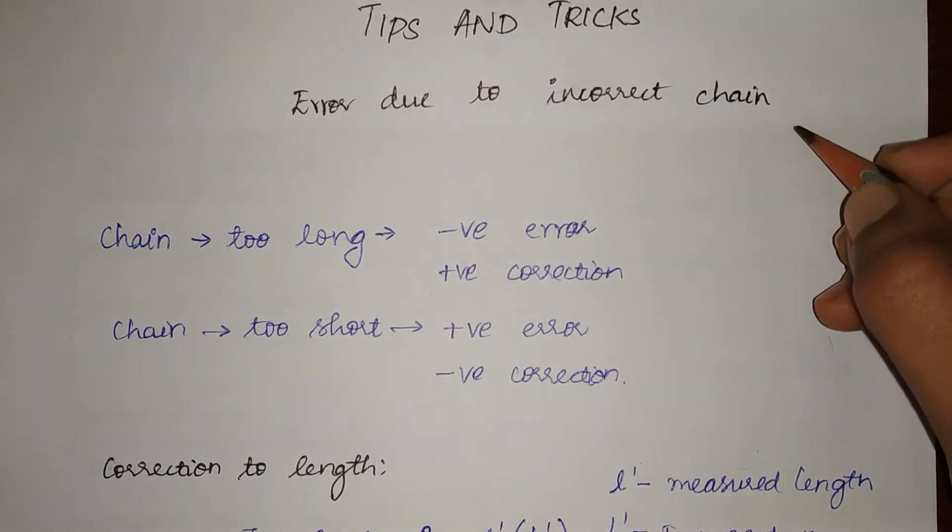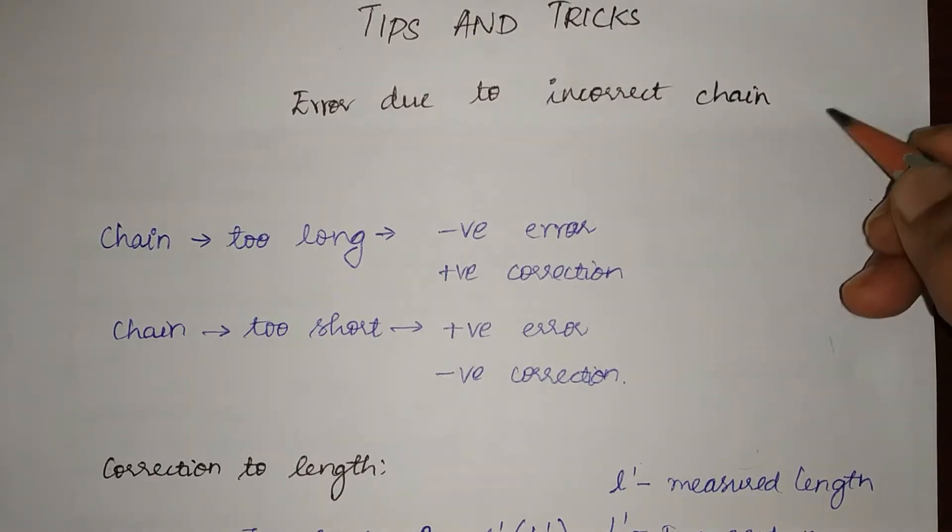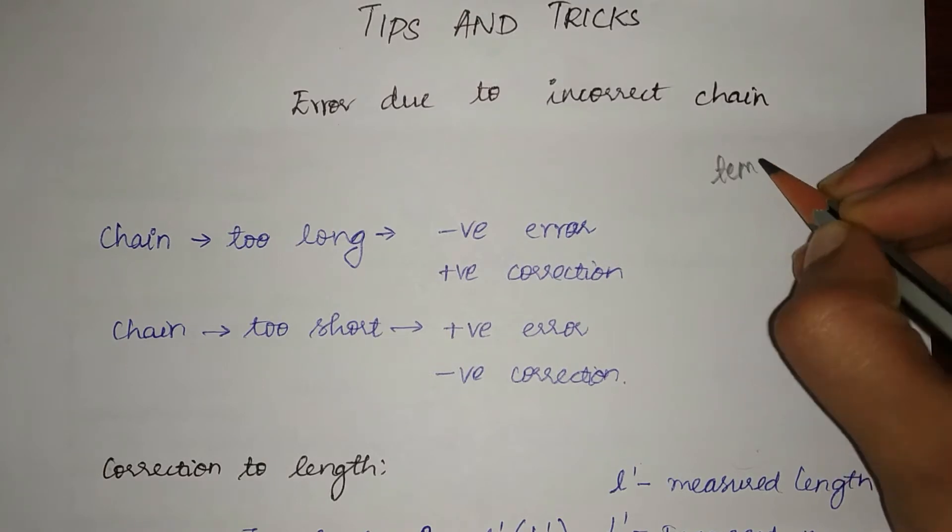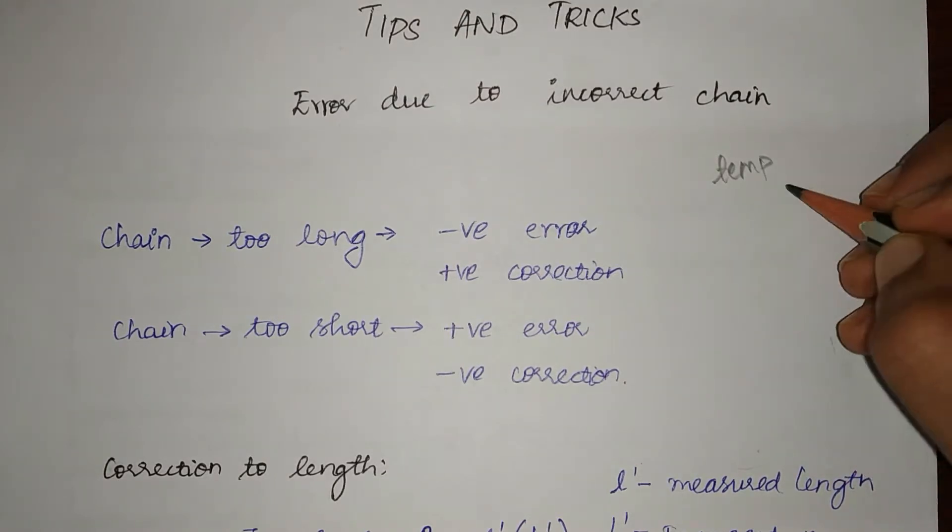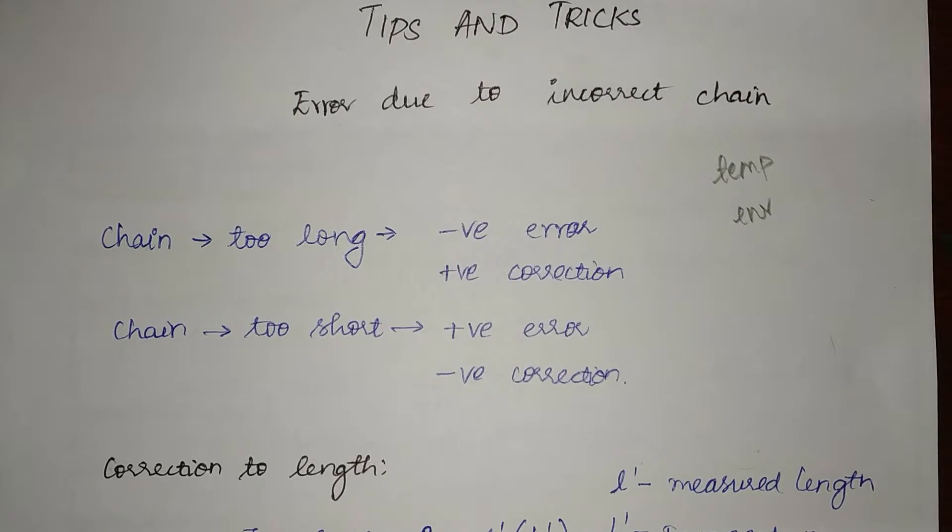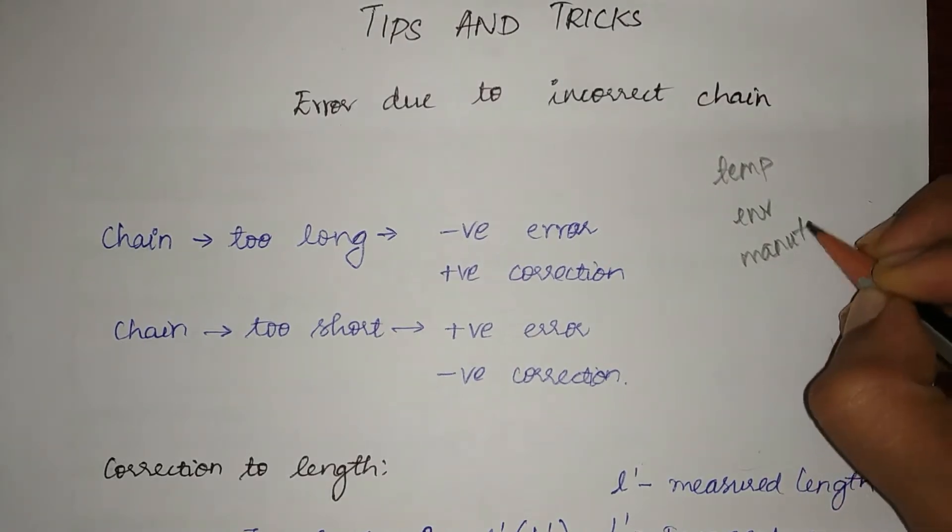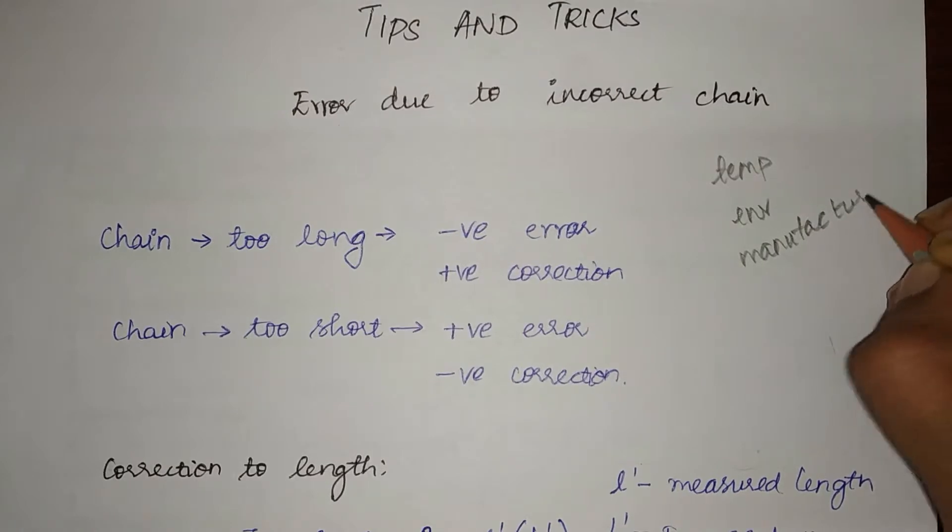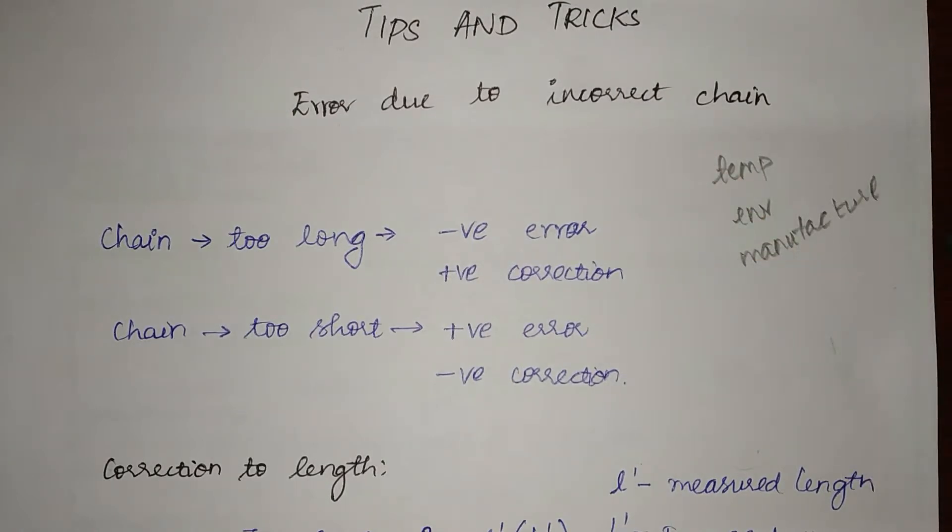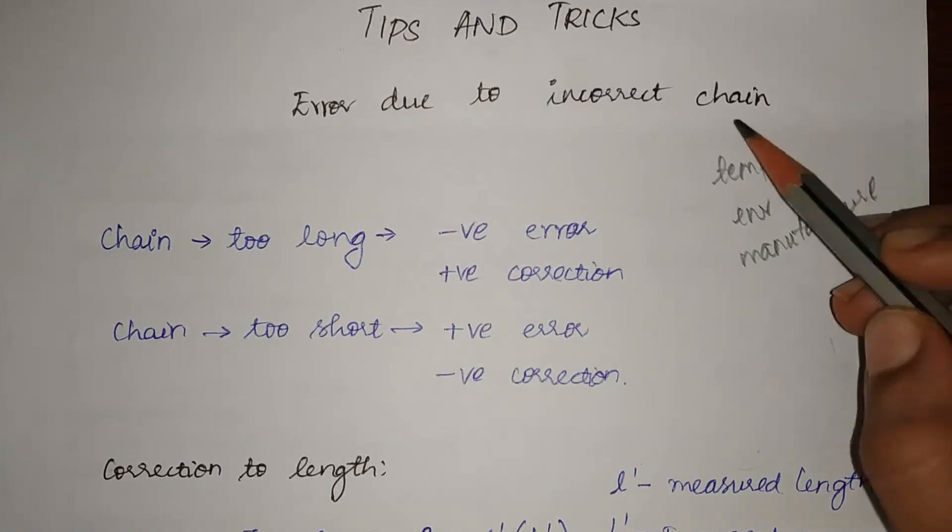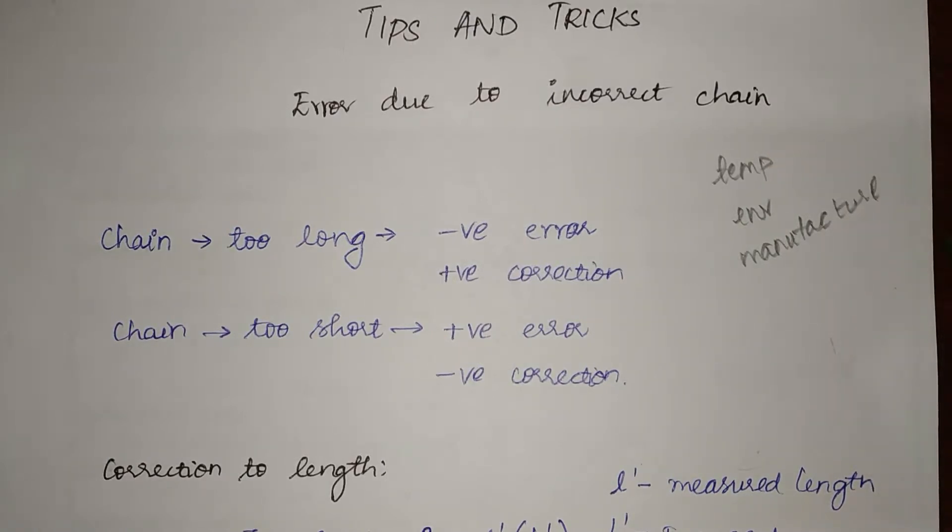Error due to incorrect chain may occur due to many reasons. It can be due to temperature, environmental conditions, or the manufacturer may have made a mistake during manufacturing. The reason can be anything, and because of it the size of the chain increases or decreases.